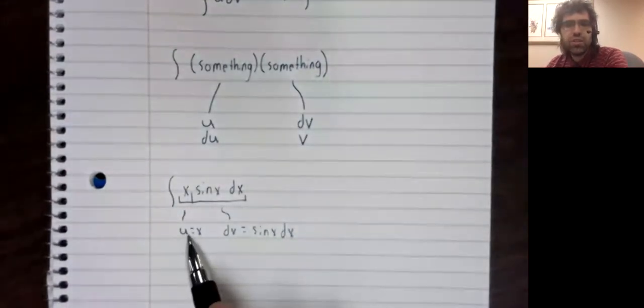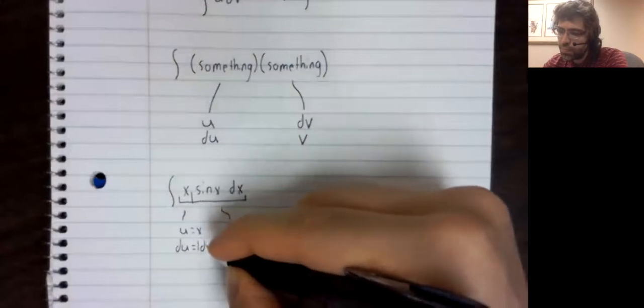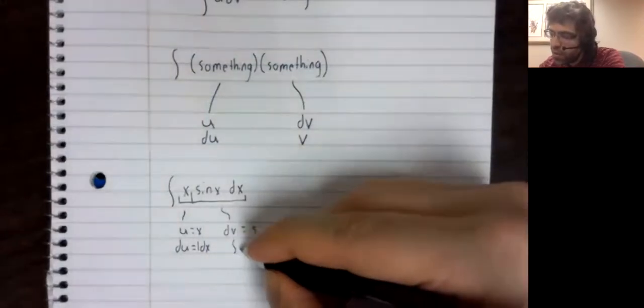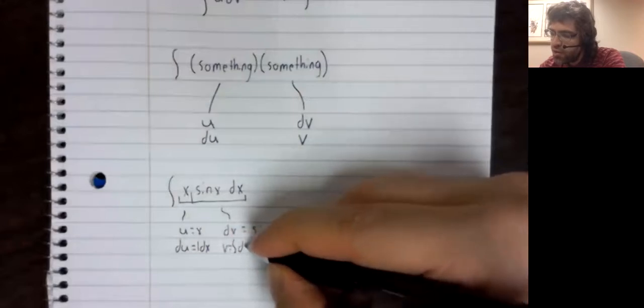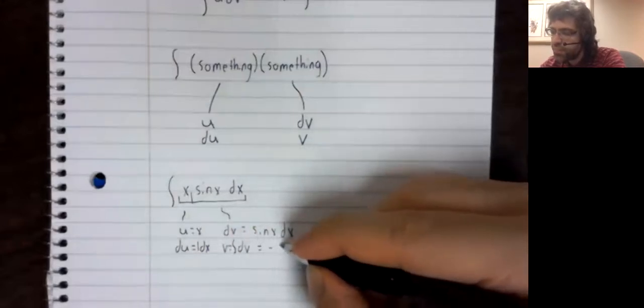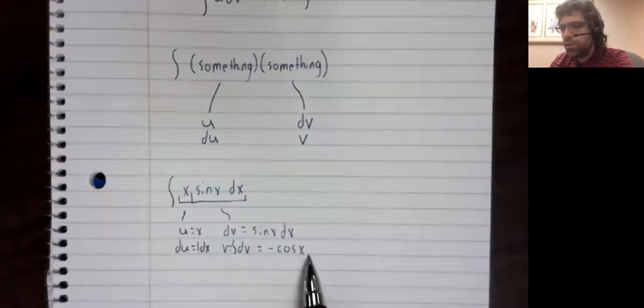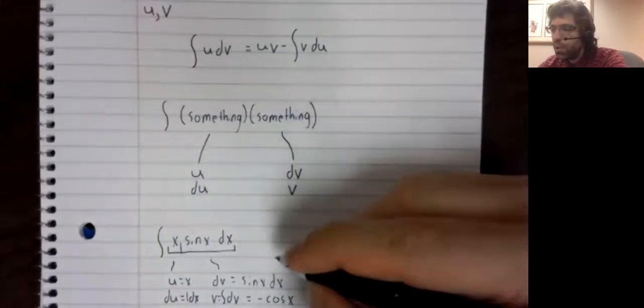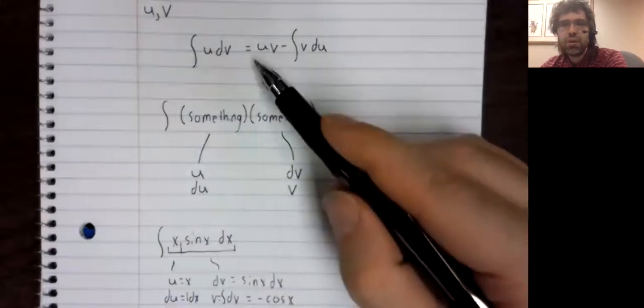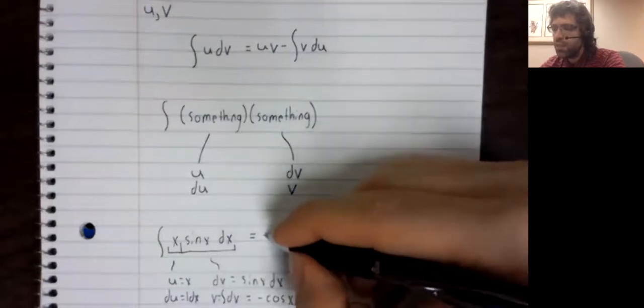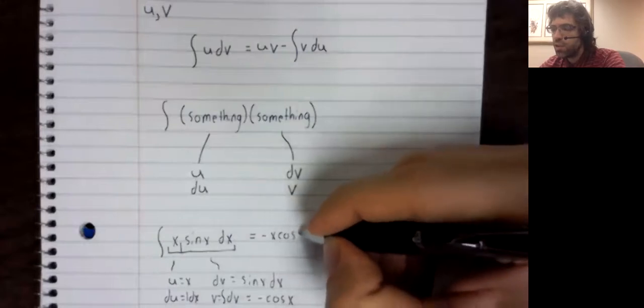And we integrate U to get to dU. Sorry, we differentiate U to get dU. We integrate dV to get to V. When we're doing integration by parts, we don't bother with a constant of integration here. And now we put these pieces together according to this formula. U times V. Negative X times the cosine of X.